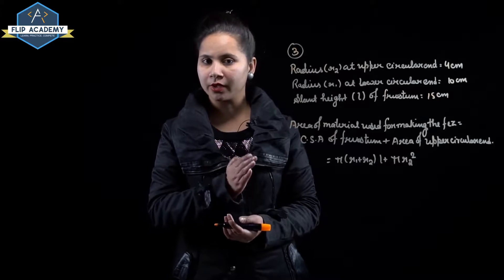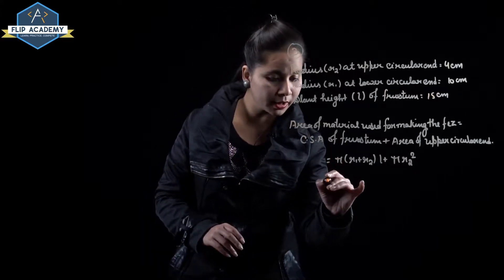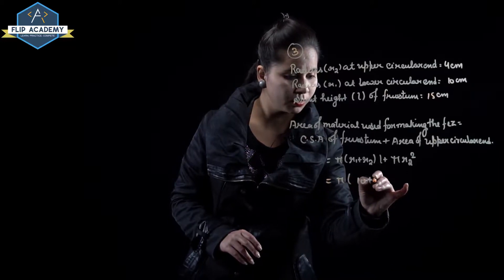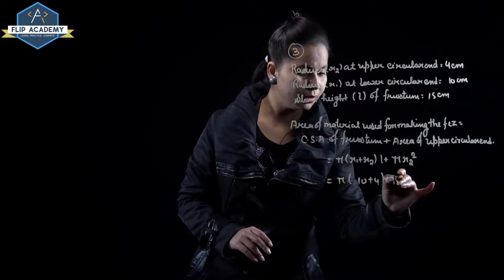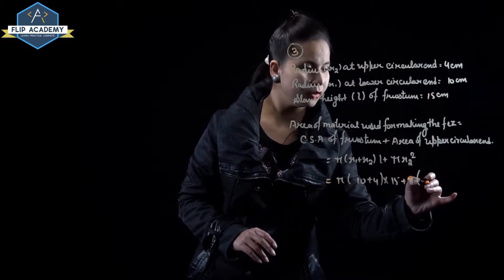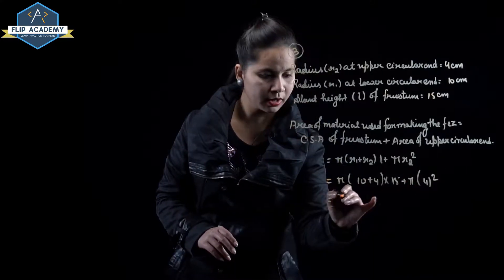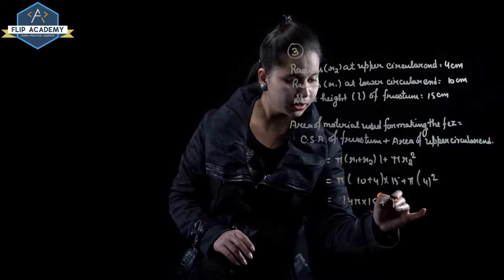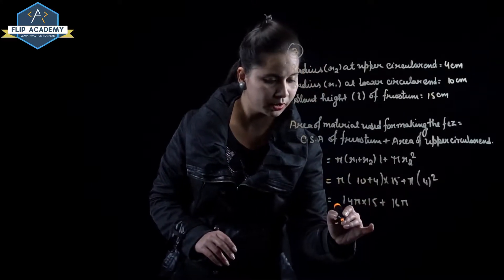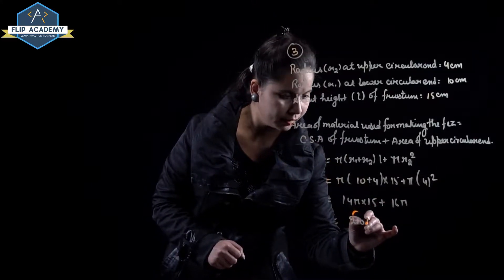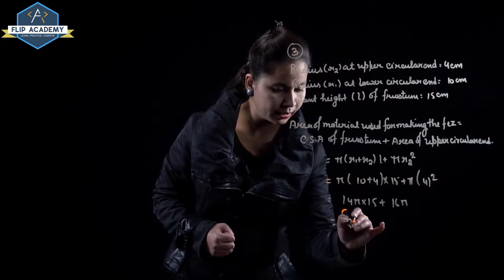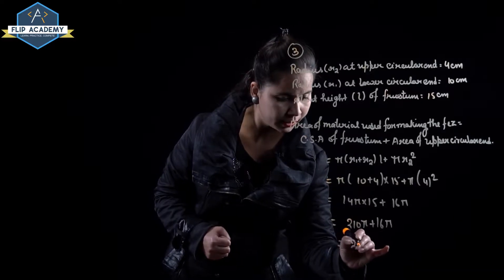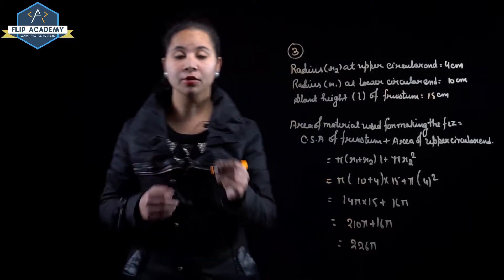Substitute the values of r1, r2, and l: pi into 10 plus 4 into 15, plus pi into 4 square. This gives 14 pi into 15 plus 16 pi, equal to 210 pi plus 16 pi, equal to 226 pi.